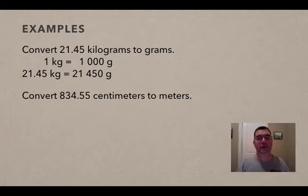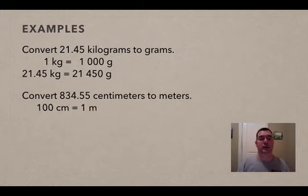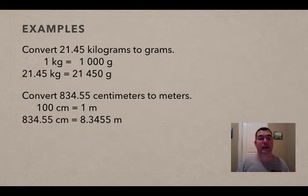Then if I wanted to convert eight hundred thirty-four point five centimeters to meters, then I know that one hundred centimeters is equal to one meter. And if I multiply both sides by the same thing again, I get eight hundred and thirty-four point five centimeters equals eight point three four five five meters. So those are just a couple of examples of converting using those prefixes.